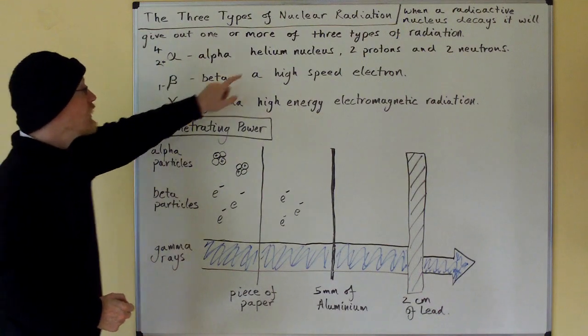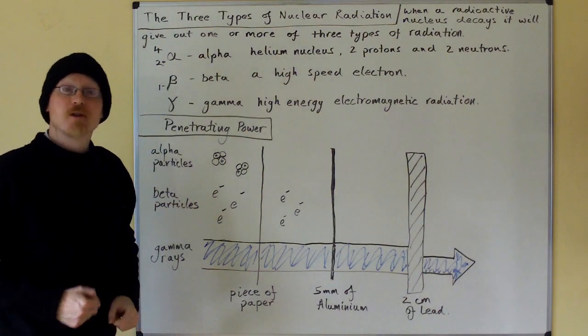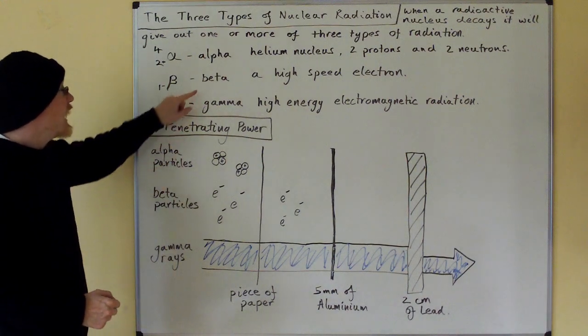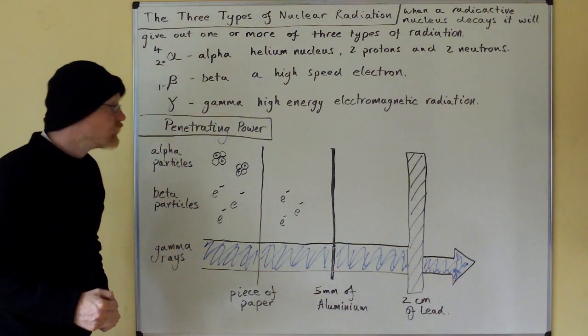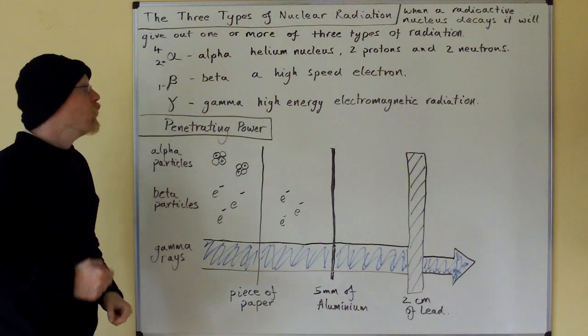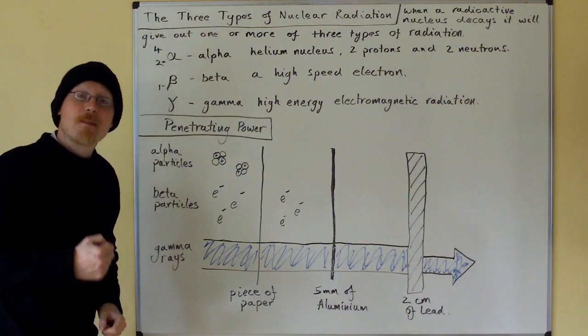First is alpha, which is a helium nucleus, two protons and two neutrons. The second is beta, which is a high-speed electron, and the third is gamma, which is a high-energy electromagnetic wave.